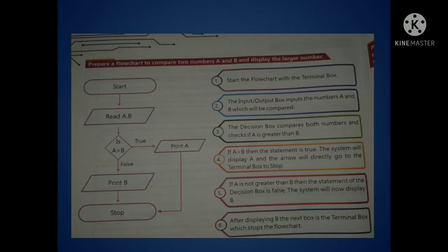Now, we are going to prepare a flowchart to compare two numbers a and b and display the larger number. First, we will use the terminal box and start our flowchart. Secondly, we will use the input and output box so that we can input our number a and b which will be compared. Thirdly, we will use the decision box so that we compare the number 1 and number 2 which one is greater in both of them.